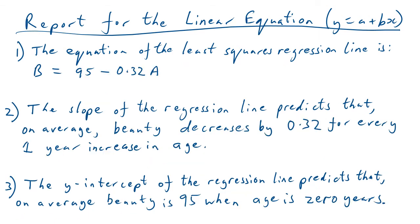So imagine you put some stuff in your calculator, and you've got the a equals 95, and the b equals minus 0.32. For this example, in this case, the b stands for the beauty. So when we say in terms of the variables, that's what we're talking about, and the a stands for age. So this is what we mean by in terms of the variables, that key phrase. And there's our statement. And then we say the slope of the regression line predicts that on average, beauty decreases. We said decreases because we've got that minus there. And then we say by 0.32 for every one year increase in age. So as your age goes up, beauty goes down.